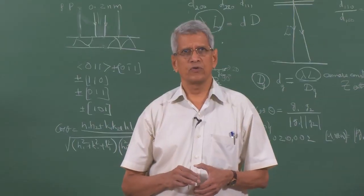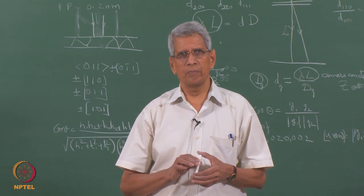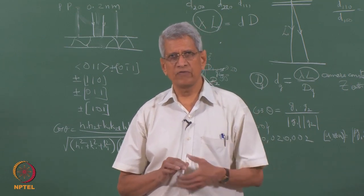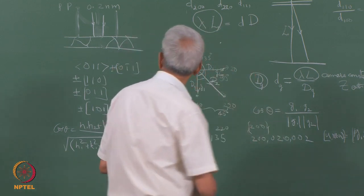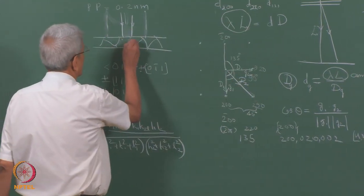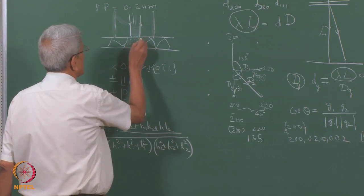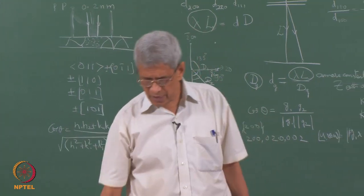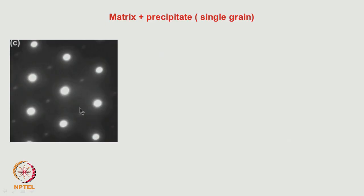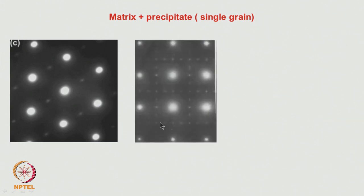The patterns considered so far are simple patterns from a single phase. Quite often, even in the matrix region, second phase particles are distributed. Depending on their orientation, they give rise to extra reflections. By indexing both the matrix and the second phase particle reflections, we can get information about the orientation relationship between them, which is necessary for correlating microstructure to mechanical properties.